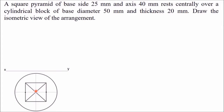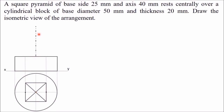Now draw the front view. The height of the cylinder is 20 mm, so the cylinder appears as a rectangle of height 20 mm in the front view. Complete this rectangle. On top of the cylinder, project the two end points of the pyramid base. Then project the axis: the axis height is 40 mm, so mark the apex at 40 mm. Join the apex with the base ends — these two slant edges are visible in the front view.